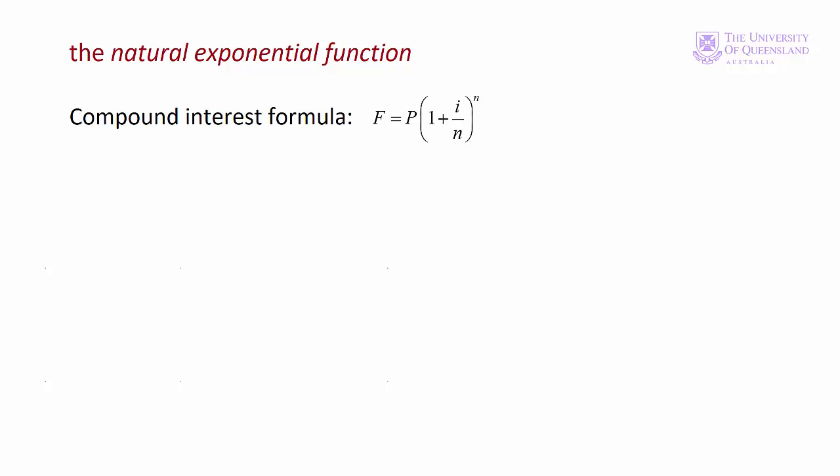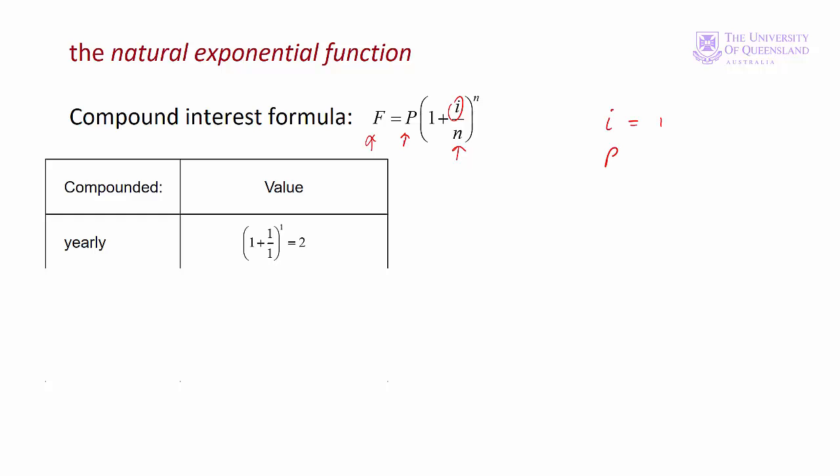This is our compound interest formula. We have a future value, the principal, the interest rate and the number of compounding periods. Let's simplify that by letting i equal 1 and p equal 1. Letting the principal equal 1 is simple. We'll see that letting the annual interest rate equal 1 doesn't make any difference when we consider that n will be approaching infinity.